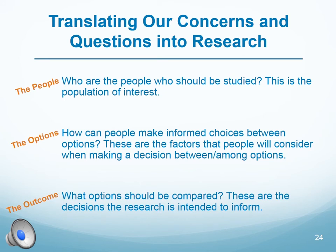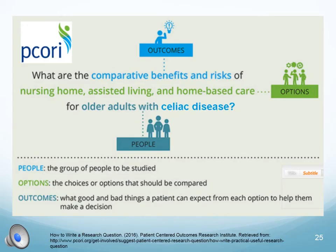Patients will put it in perspective — here is how we translate our concerns and questions into research. We must define the people, the options, and the outcomes. Who are the people who should be studied? This is the population of interest. How can people make informed choices between options? These are the factors that people will consider when making a decision. What options should be compared? These are the decisions the research is intended to inform. For example, what are the comparative benefits and risks of nursing home, assisted living, and home-based care for older adults with celiac disease? The people are the group being studied; the options are the choices to be compared; and the outcomes are the good and bad things a patient can expect from each option to help them make a decision.